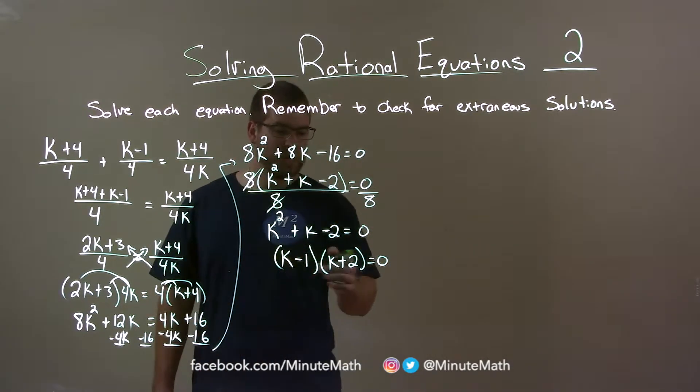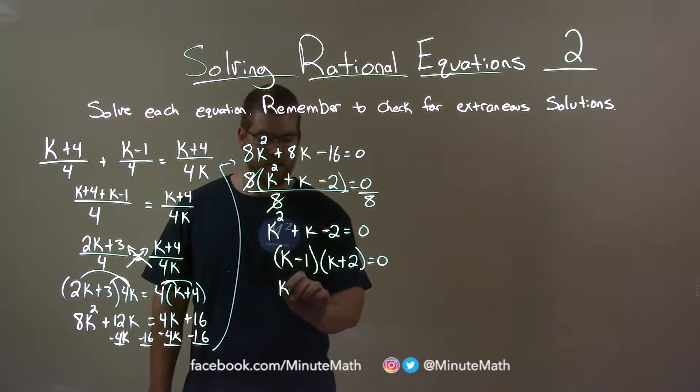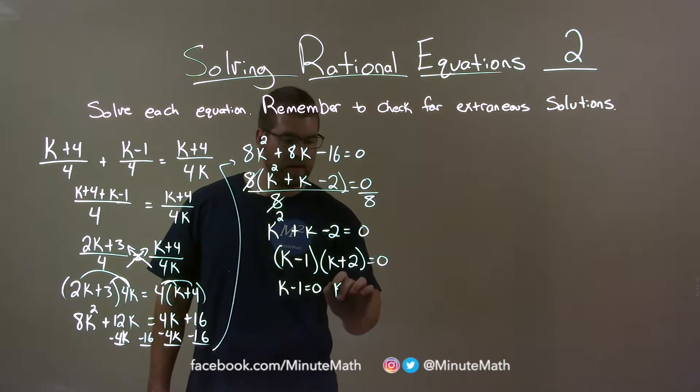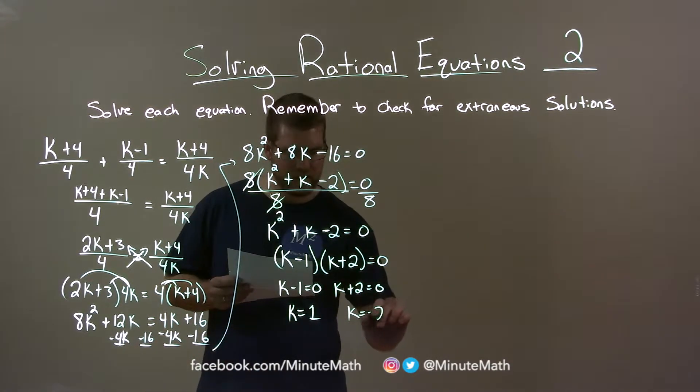So we factor that out. And so now it's pretty simple. Set each one individually equals 0. k minus 1 equals 0, k plus 2 equals 0. And so we have a final answer of k equals 1 and k equals negative 2.